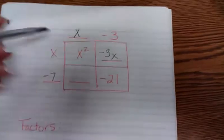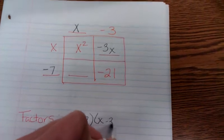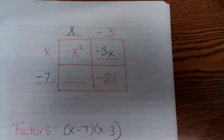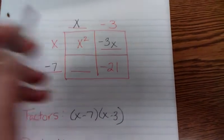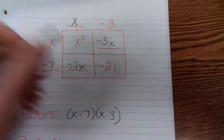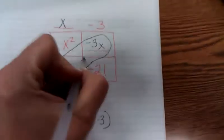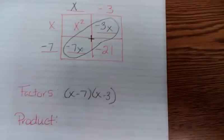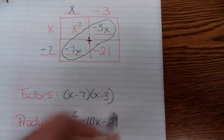Well now I have my factors, which is x minus 7 times x minus 3. Now to find my product. Oh, I didn't do this box again. Negative 7 times x is negative 7x. I put these x's right here together. Remember you're adding them. So I get x squared minus 10x minus 21.